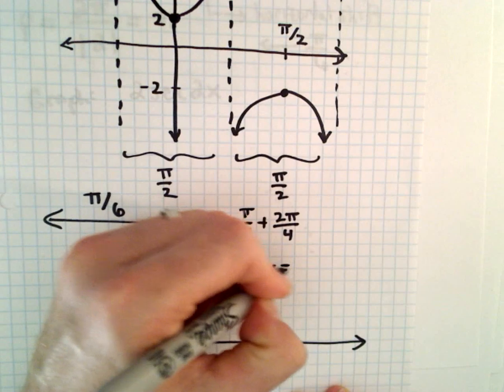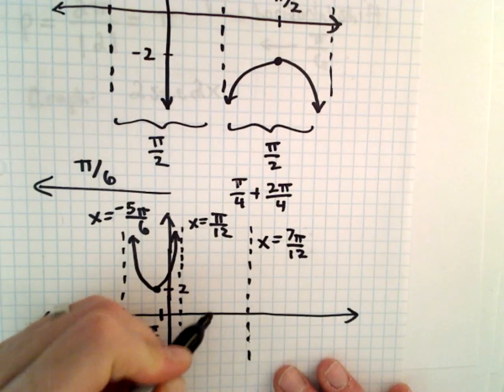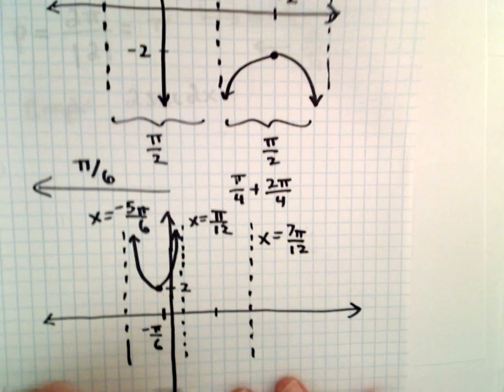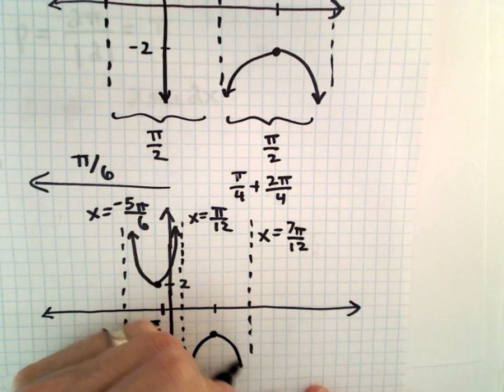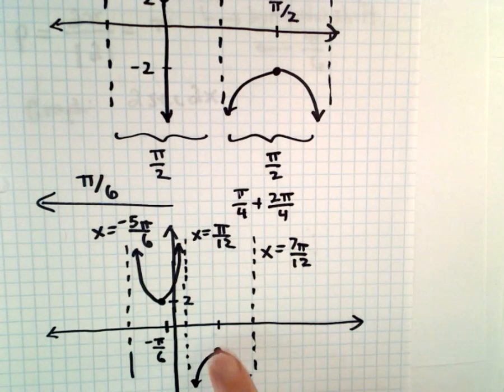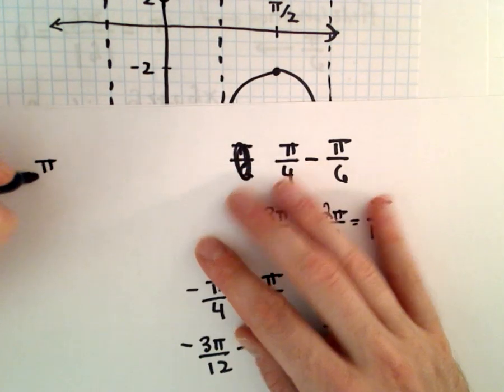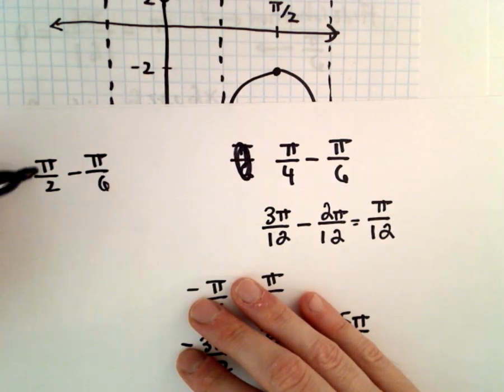So, there's x equals 7 pi over 12, and right in the middle, that's where you're going to hit the value of negative 2. It's going to decrease and decrease, and if you want to find that new coordinate, you could do the same thing. You could take pi over 2, subtract away pi over 6.